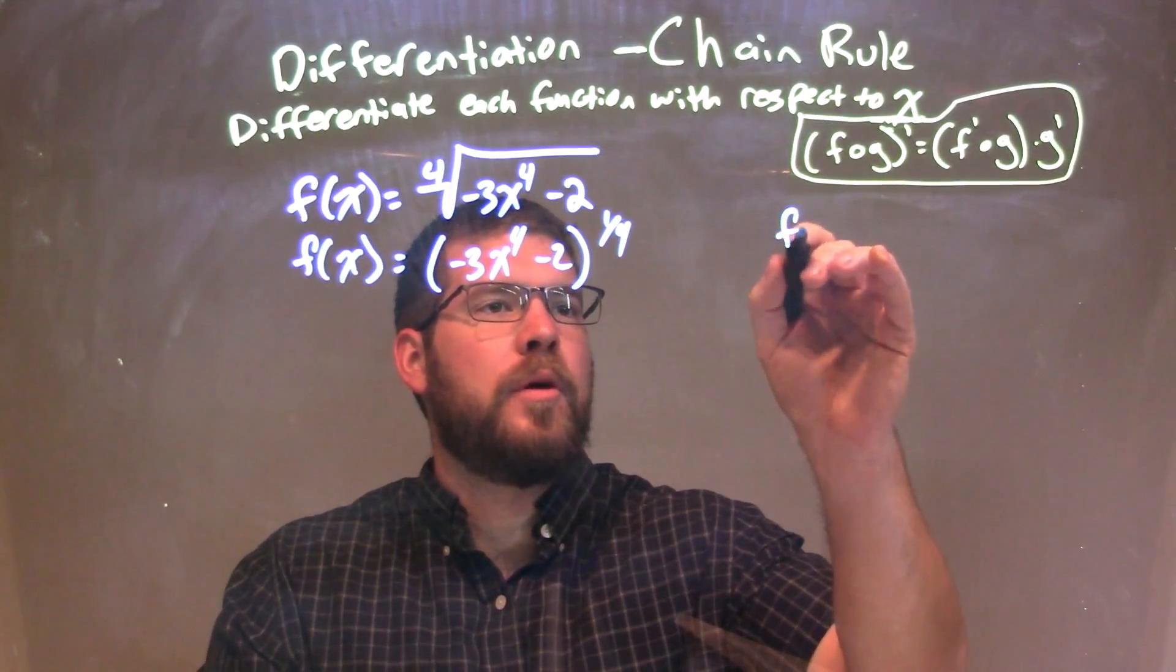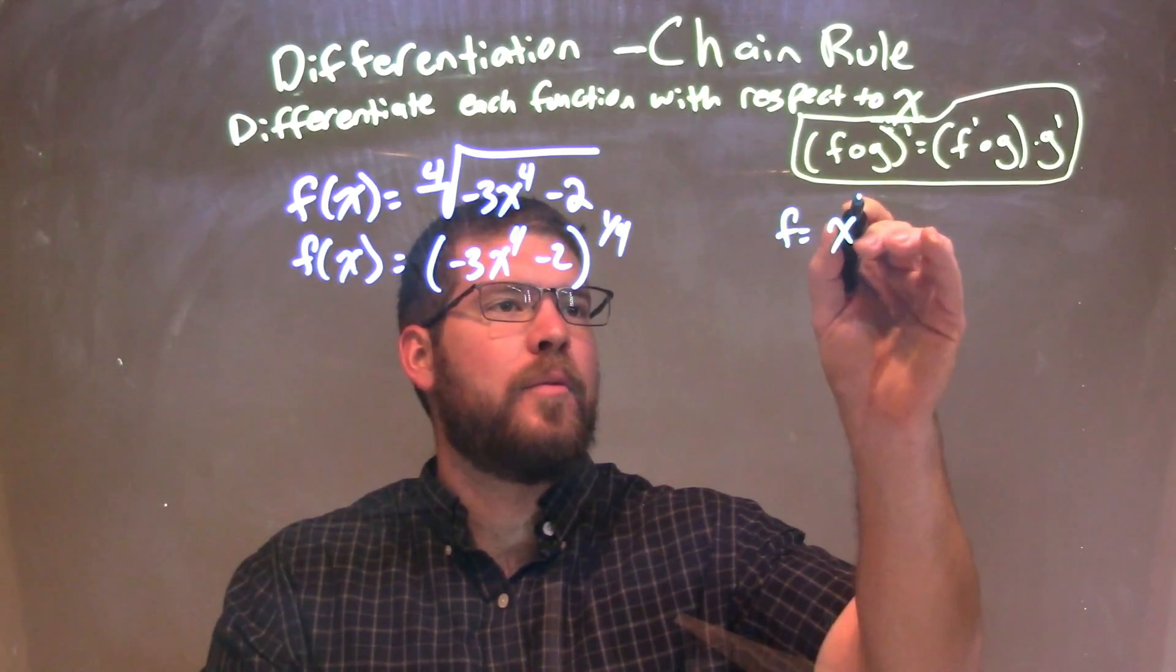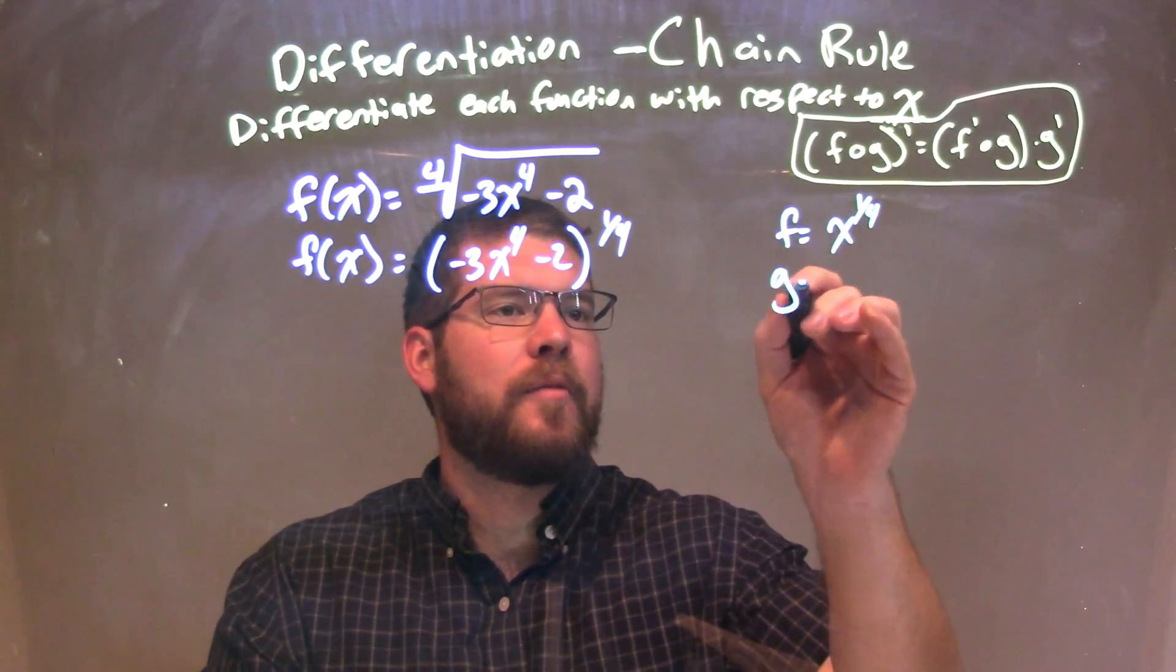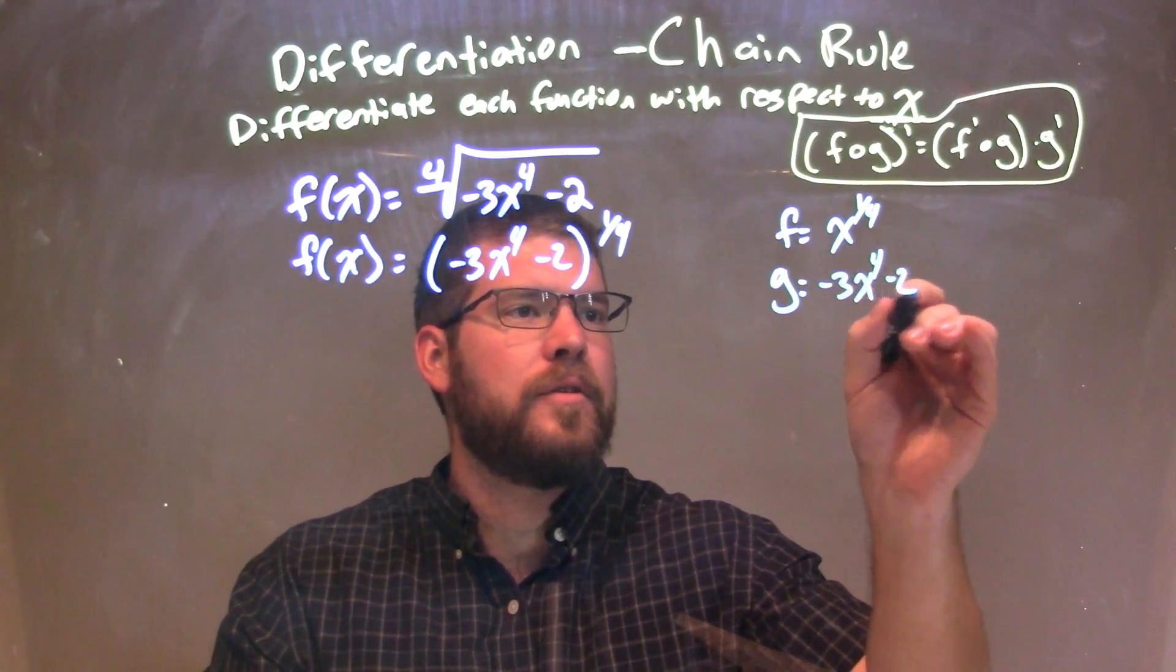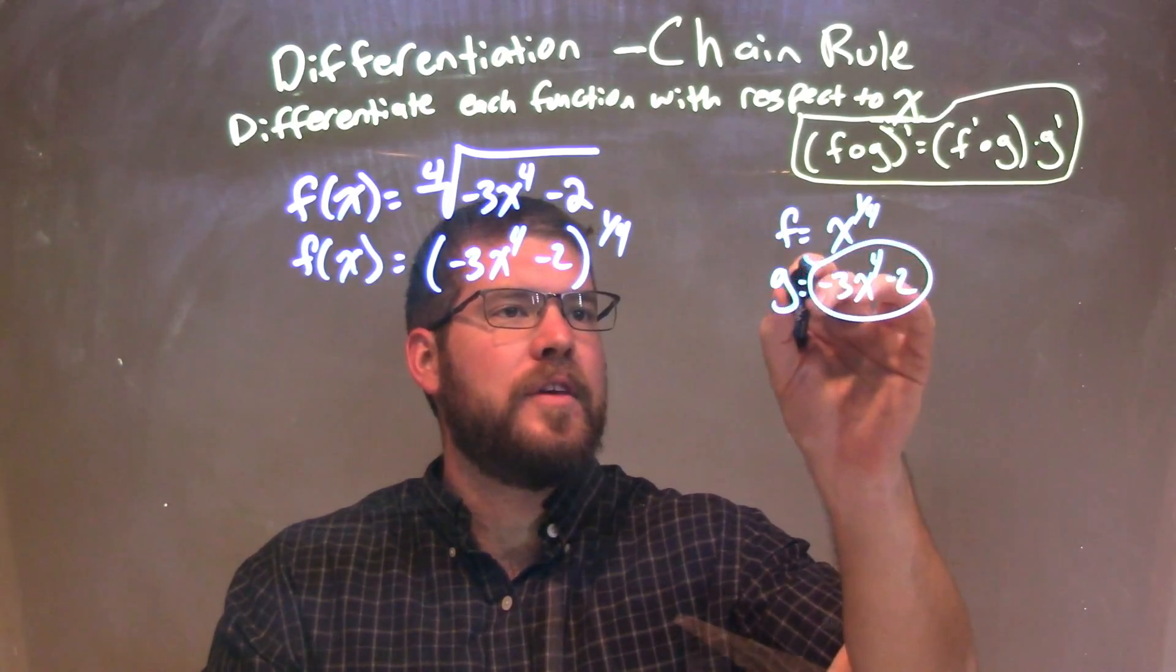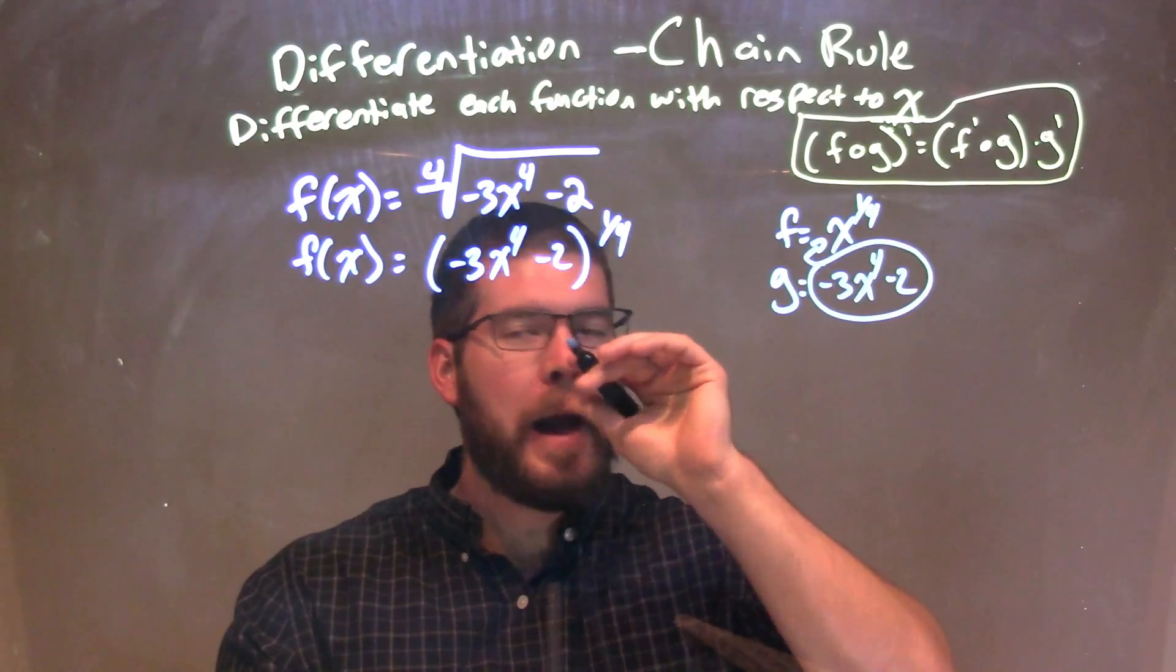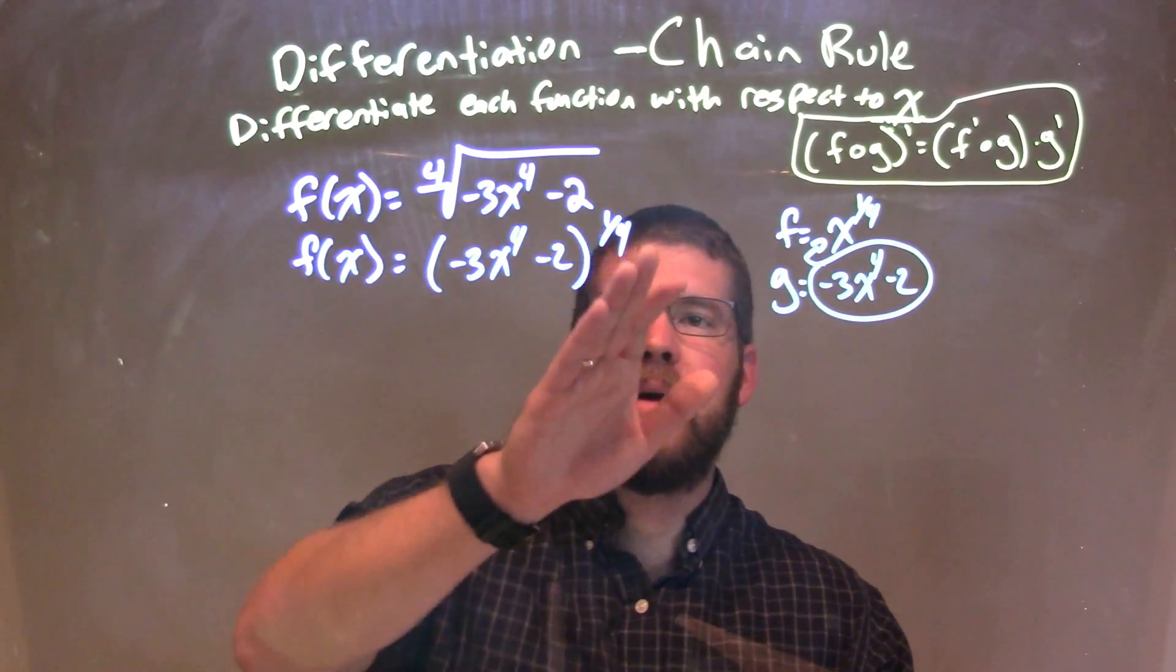Let's go find my f of g. Well, if f I can write as x to the one-fourth power, g I can write what's inside the parentheses as negative 3x to the fourth minus 2. And I can see if I plug that in for my x, I have my f of g right there, right, my f of g.